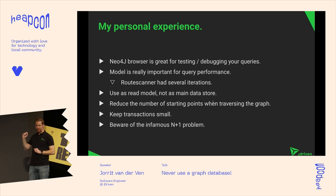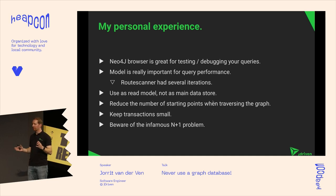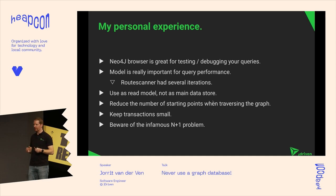At Route Scanner, our model grew and grew and we had to make several iterations to keep performance on par. So if you're going to run a graph database in production with a lot of intensive queries, your model will probably need a few iterations before it's really up to standards. This has to do with the way you're querying your data — at first you're just exploring, figuring out if you can run the queries you want, and when you can, you'll want to optimize the model to make it faster.